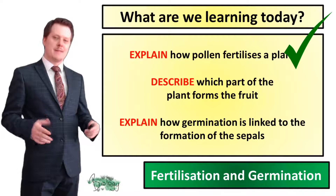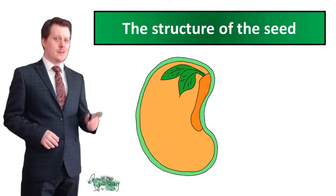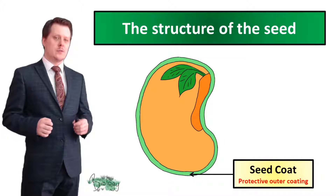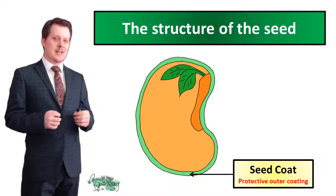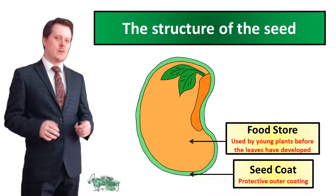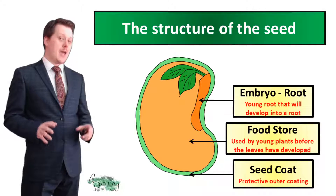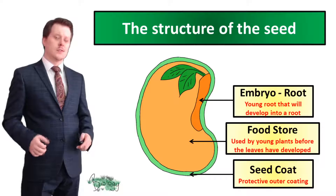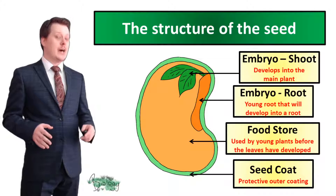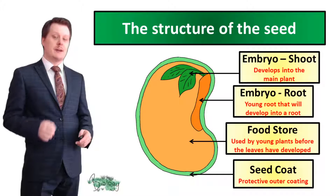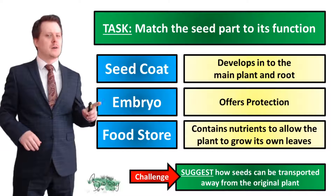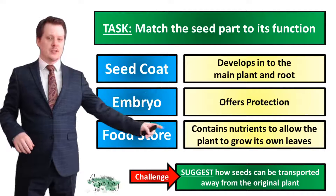To describe which part of the plant forms the fruit, we first need to look at the seed. The seed consists of three main components: the seed coat, which forms a protective outer layer; a food store, which is used by young plants before they're able to photosynthesize; and the embryo, which consists of two parts — the root, which will grow downwards, and the shoot, which will grow upwards and develop into the main plant.